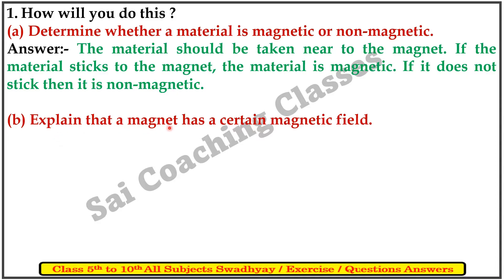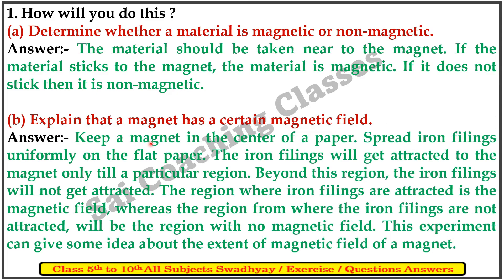B. Explain that a magnet has a certain magnetic field. Answer: Keep a magnet in the center of the paper and spread iron filings uniformly on the flat paper. The iron filings will get attracted to the magnet only till a particular region. Beyond this region, the iron filings will not get attracted. This region where iron filings are attracted is the magnetic field, whereas the region where they are not attracted has no magnetic field. This experiment can give some idea about the extent of the magnetic field of a magnet.